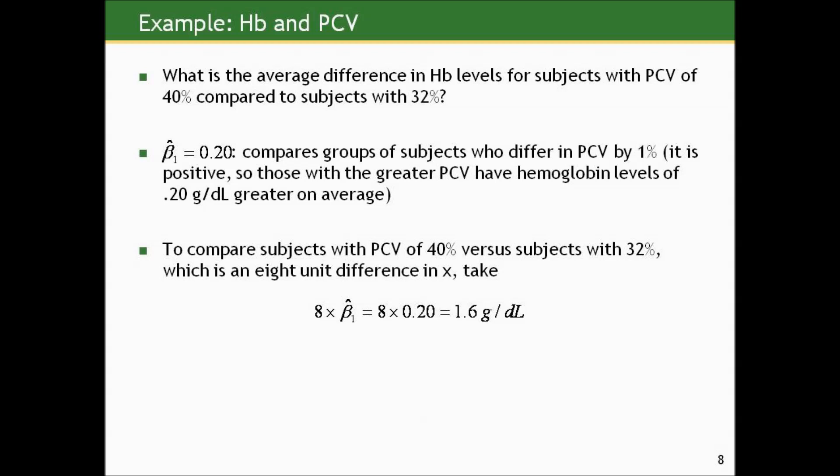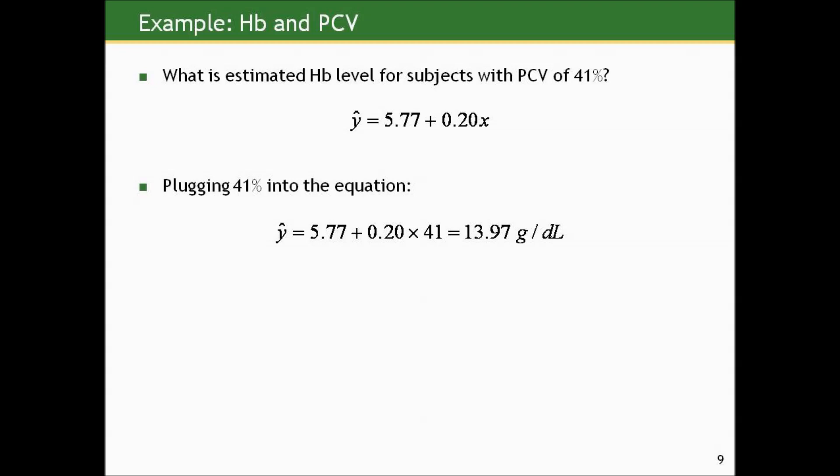What if we wanted to compute the average difference for subjects who differ by 8% in packed cell volume — for example, a group with packed cell volume of 40% compared to 32%? The slope is 0.2, comparing groups differing by 1%, so for an 8-unit difference in X we multiply 8 by 0.2, giving us 1.6 grams per deciliter. We can also use this equation to estimate the mean for any fixed value — plugging in 41% gives an estimated mean hemoglobin of 13.97 grams per deciliter.